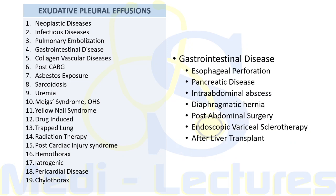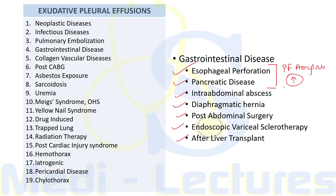Gastrointestinal diseases causing pleural effusion include esophageal perforation, pancreatic disease, intra-abdominal abscess, diaphragmatic hernia, post-abdominal surgery, endoscopic variceal sclerotherapy, and post-liver transplant. Pleural fluid amylase is increased in esophageal perforation and pancreatic disease. If the patient presents with fever, increased polymorphonuclear cells in pleural fluid, and no pulmonary parenchymal abnormality, intra-abdominal abscess should be suspected.